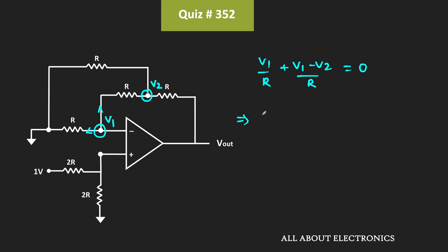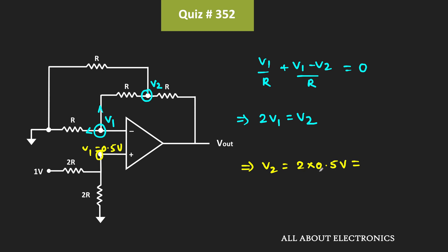From this we can say that 2V1 is equal to V2. And we know that V1 is equal to 0.5V. Therefore V2 is equal to 2 times 0.5V, which means this voltage V2 is equal to 1V.